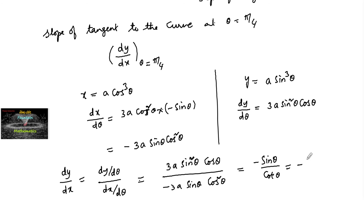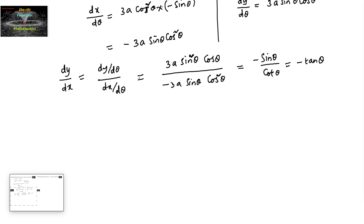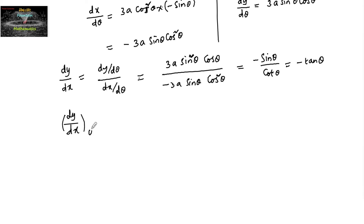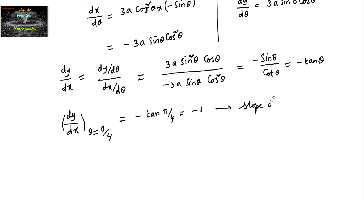After cancellation we get minus sin theta upon cos theta, or minus tan theta. So dy by dx at theta equal to pi by 4 is equal to minus tan(pi by 4), which equals negative 1. This is the slope of the tangent to the curve.